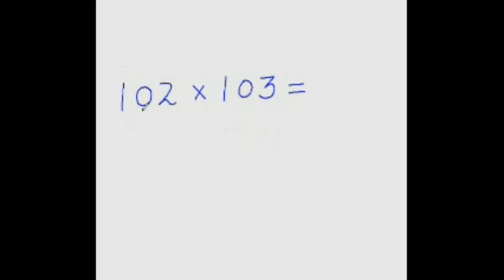Now to multiply 102 with 103, all you need to do is add this 3 to this entire number. So 102 plus 3 is 105. Now two more digits to go, so 2 times 3 is 6, so put 06 here.